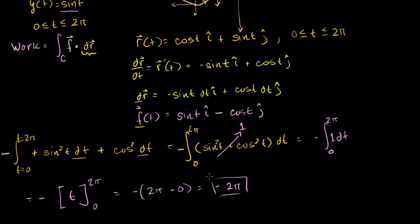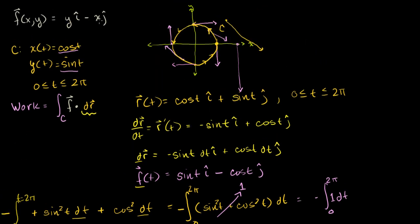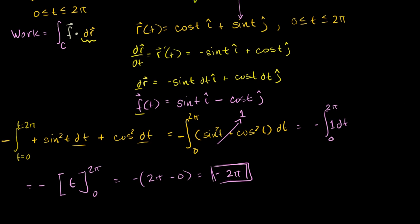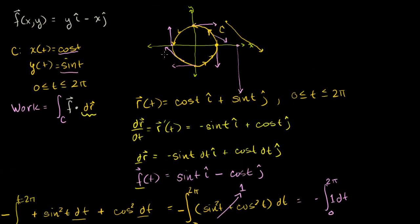And there you have it. We figured out the work that this field did on the particle as it moved around in a counterclockwise fashion — the answer is −2π. Our intuition held up: we got a negative number for the work done, because at all times the field was opposing the movement of the particle in its counterclockwise direction.